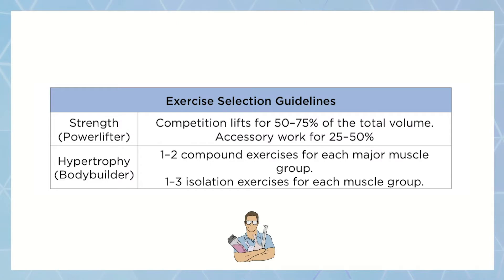Now that you've decided on your exercises, here are some practical recommendations. If you are a strength athlete, you should be doing 50 to 75 percent of your volume on those specific movement patterns. So if you're a powerlifter, you should be training the squat, bench, and deadlift for 50 to 75 percent of your volume, and then the remaining 25 to 50 percent is just going to be accessory work.